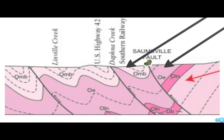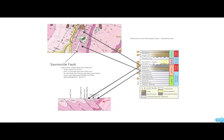Looking at it from a different perspective, this is a cross section. This is where the high school is situated — there's the Martinsburg Shale and there's the Edinburgh Formation. A little further south there's Edinburgh and Lees Shale. Bottom line is, the high school is sitting on top of the Saumsville fault, flanked by the Martinsburg and Edinburgh formations, both Ordovician in age. Incidentally, there should also be another formation between them called the Oranda Formation, but it appears to be missing, at least in this location.